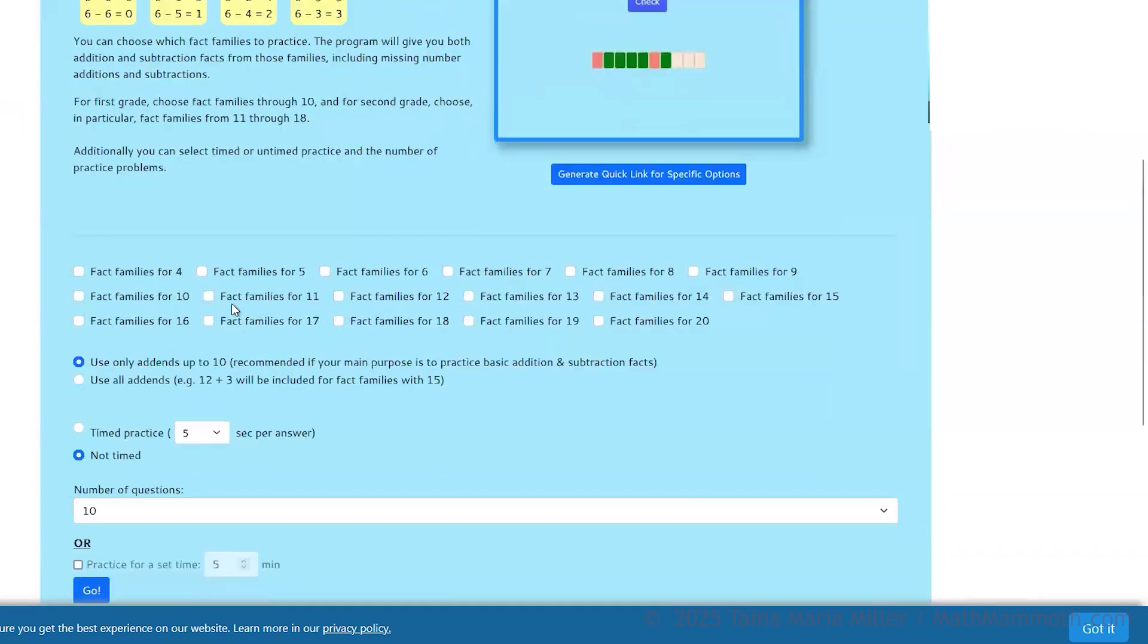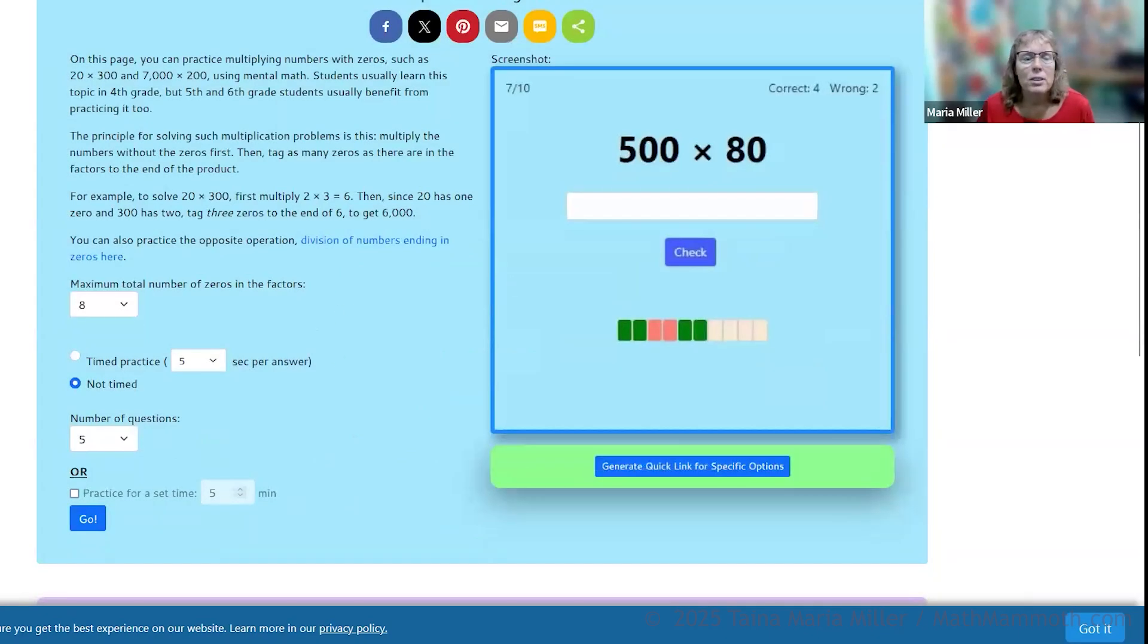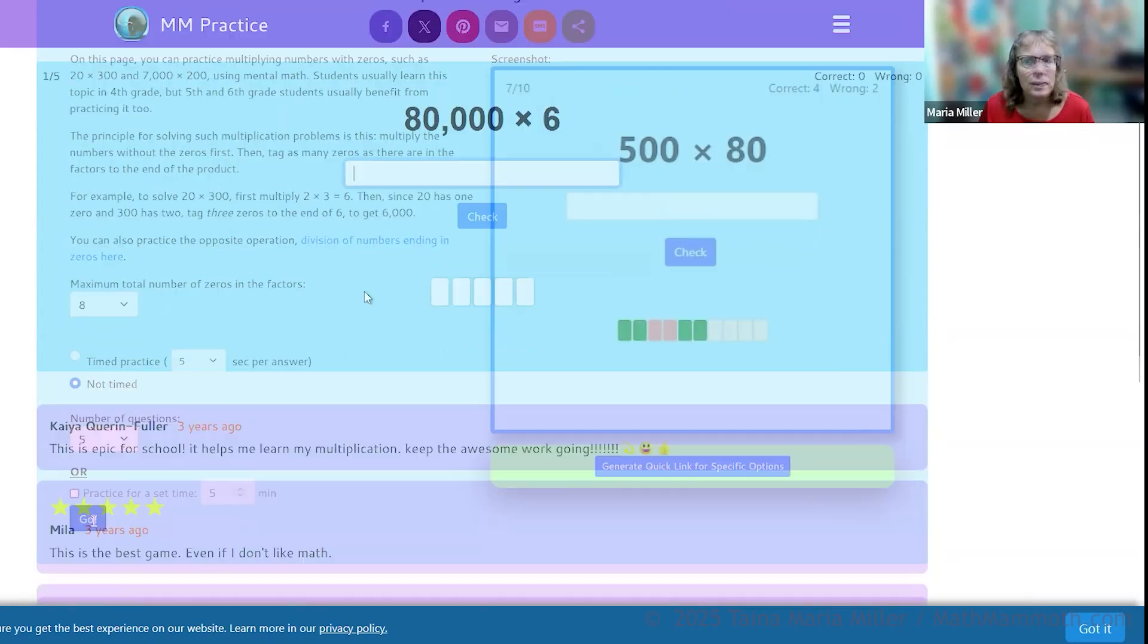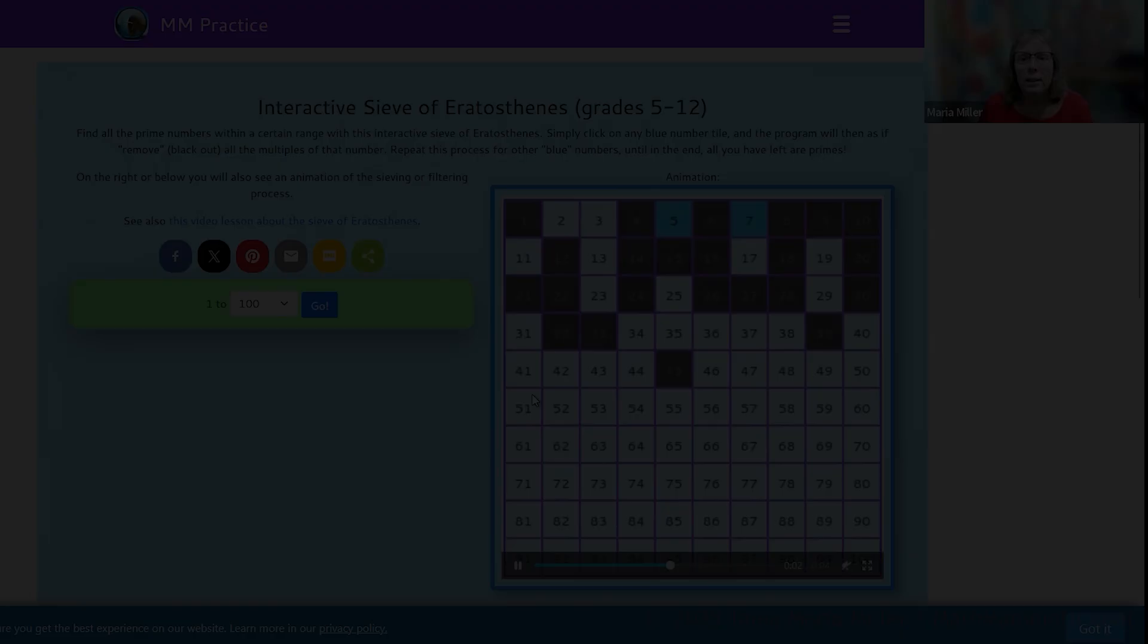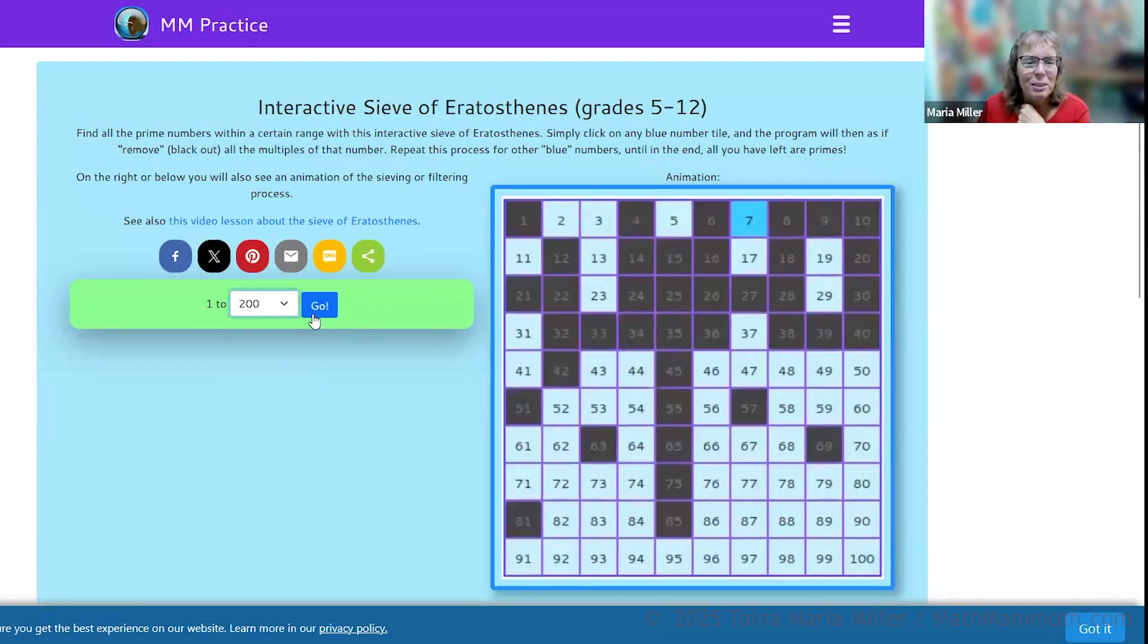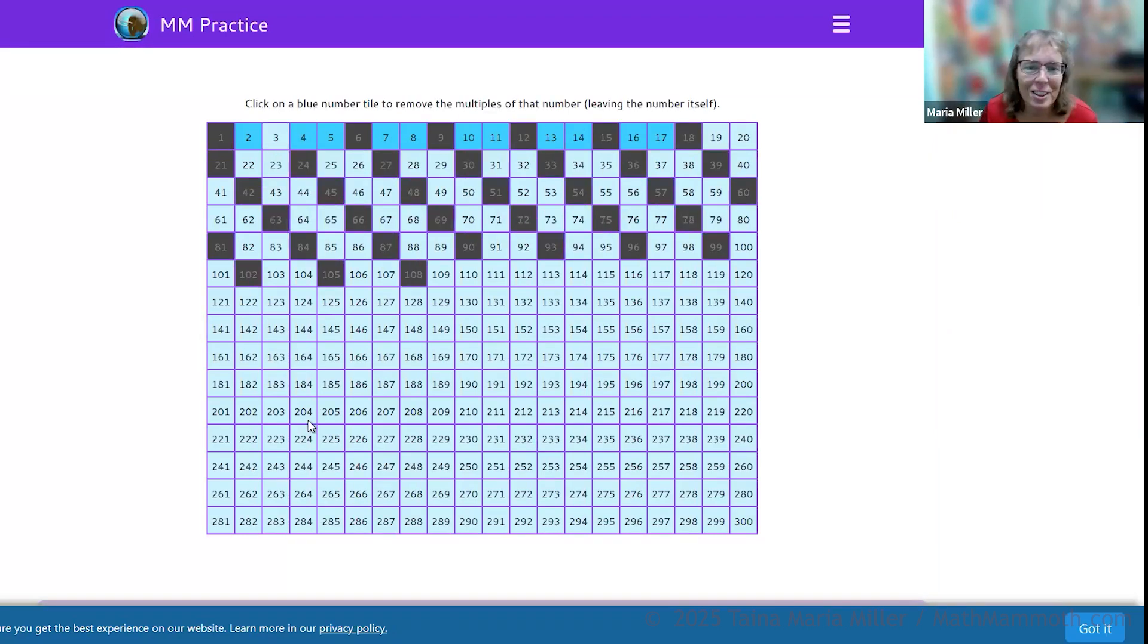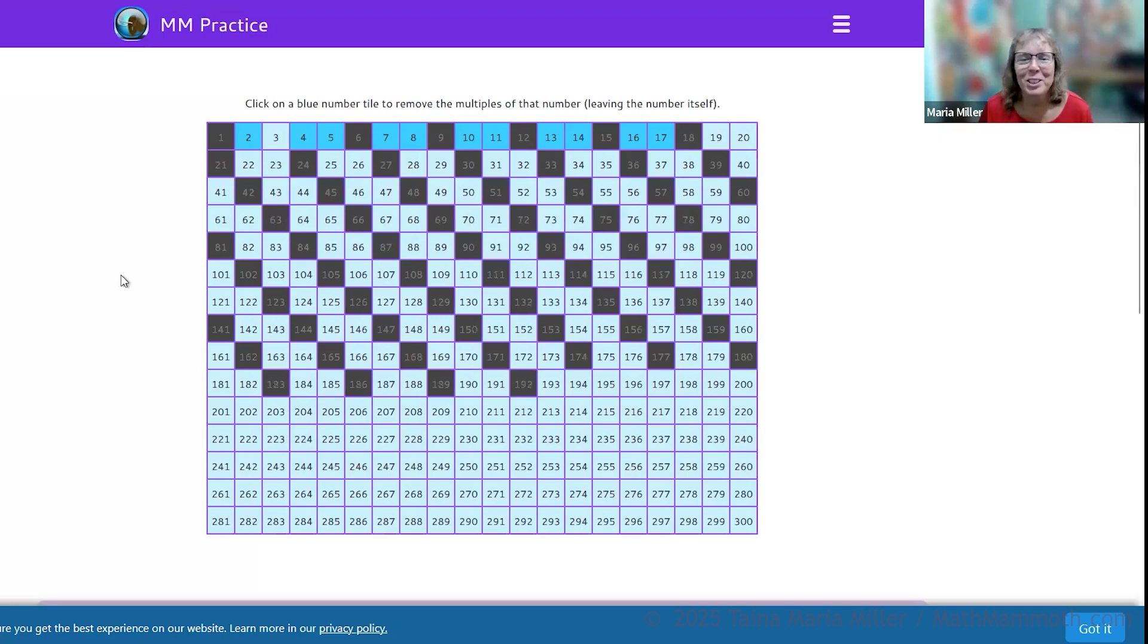Fact families. If the child is doing first grade and you only want them to practice fact families for six, then that's what you take. This is multiplication with zeros. And this is the simple questions. It doesn't have a game. It's an interactive Sieve of Eratosthenes. You might have seen that, but you can actually click on a blue tile to remove all the multiples of that number. My son coded all these, so I'm thankful for these abilities.